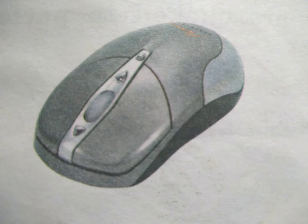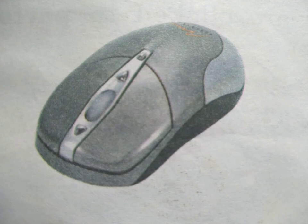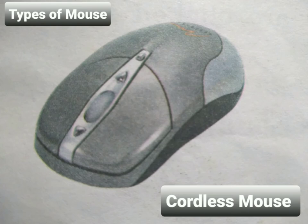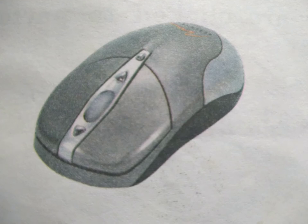This one is cordless mouse. You see in the picture, there is no cord. It is cordless — a wireless or cordless mouse. A cordless mouse has no cord to connect to the computer. It connects to your computer with a radio signal.